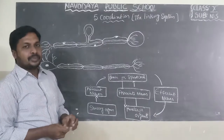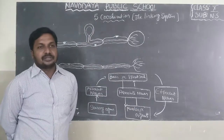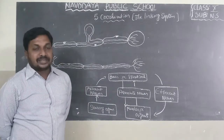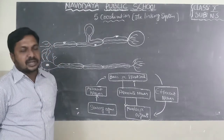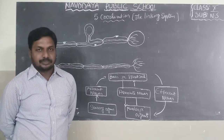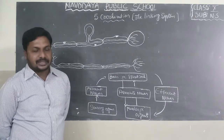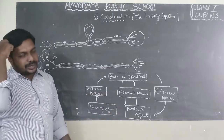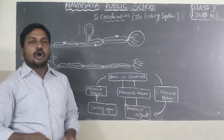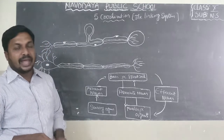Hello students. In the previous class, I covered the 5th lesson on coordination in the structure of nerve cell and also explained synapse. Once again, I will repeat the parts of the nerve cell. The nerve cell is the structural and functional unit of the nervous system. It consists of three major parts: axon, cytone, and dendrites. When neurons unite, they form a synapse — a functional region of contact between two neurons where information is passed from one neuron to another.